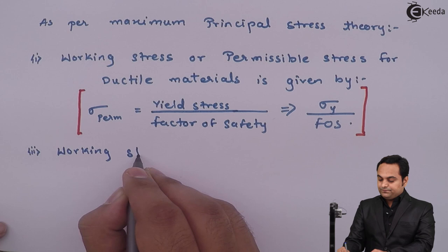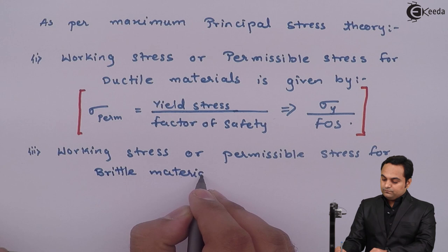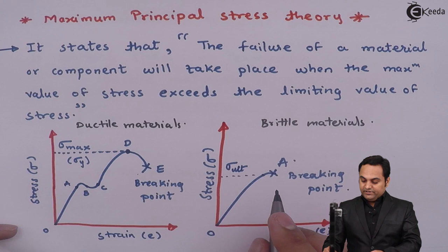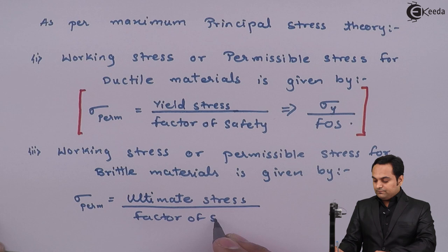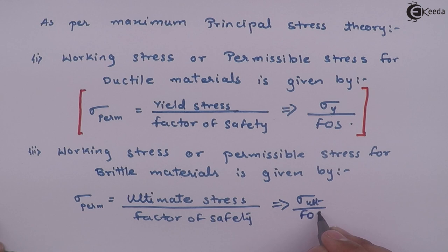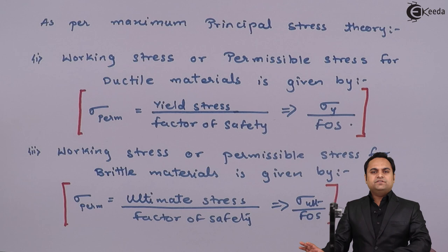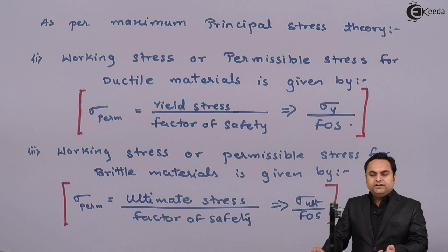For brittle materials, the permissible stress is given by: the maximum stress at which the material breaks is called sigma ultimate, that is ultimate stress. So the permissible stress equals sigma_ultimate / FOS. In the maximum principal stress theory, we are only using tensile and compressive stresses; we are not considering shear stresses. Hence, this theory is used mostly for brittle materials, because they are stronger in shear compared to ductile materials.